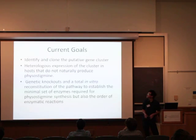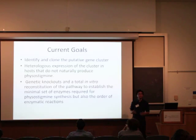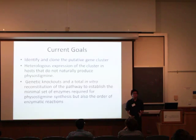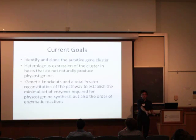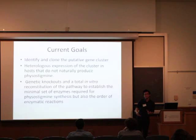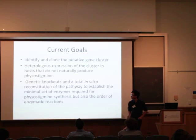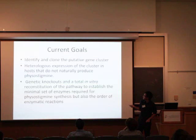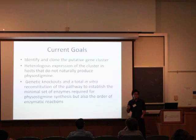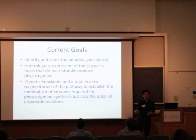The current goals of this project are: number one, identifying and cloning the putative gene cluster — we want to find in the genome of this organism the group of genes responsible for making this compound, isolate that cluster, and put it into another host that normally does not produce it. If that host still produces physostigmine with those genes, we can conclude they have a role in making this compound. We are also going to do genetic knockouts and in vitro reconstitution of the pathway, cloning out each enzyme and determining the order of reactions.